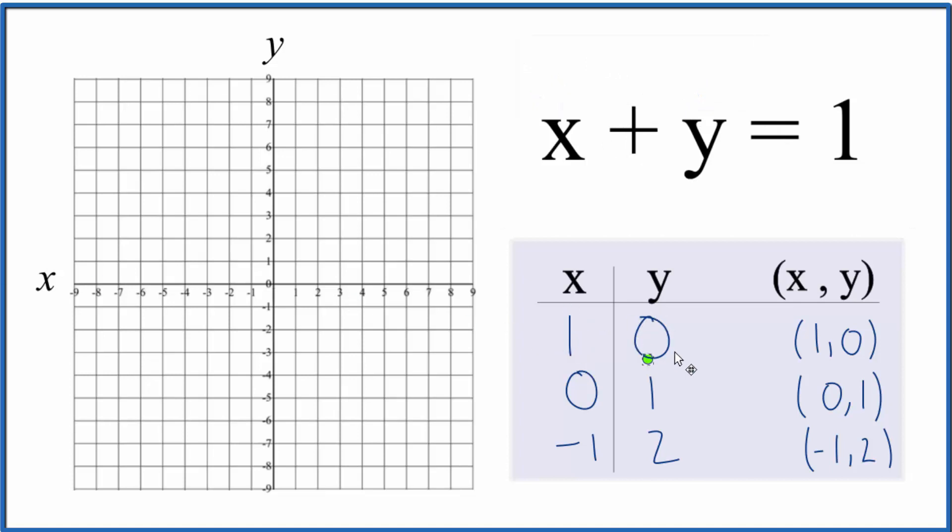So when x is 1, y will be 0. So we go where x is 1 and y is 0. So right there. When x is 0, y is 1. So 0, 1.